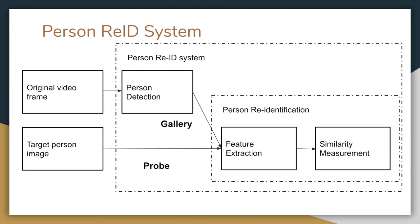From a data aspect, we have original video frames — the video captured from the camera — and we also have target person images. We detect all persons in the video frames, extract features for all probe and gallery images, then measure the similarity. After measuring the similarity, we return the most similar ones, which are more likely to be the target person.